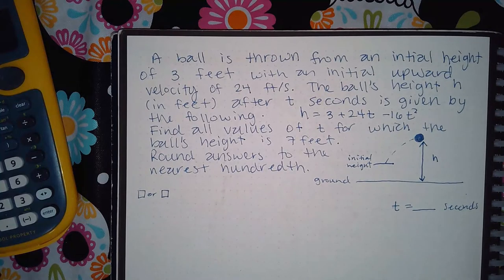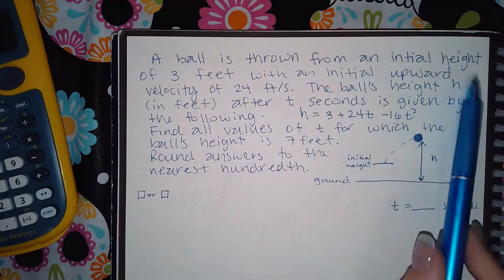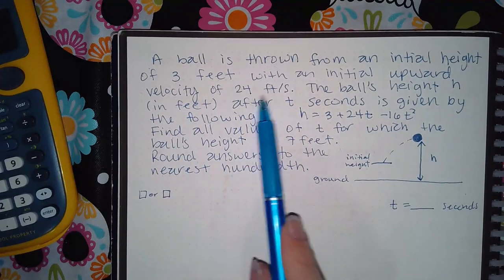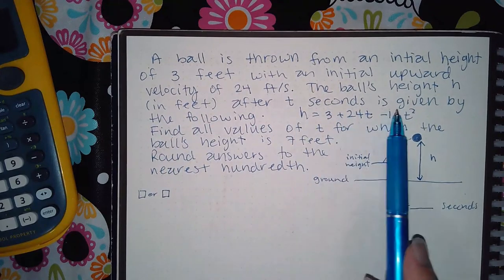In this example, a ball is thrown from an initial height of 3 feet with an initial upward velocity of 24 feet per second. The ball's height h in feet after t seconds is given by the following equation.